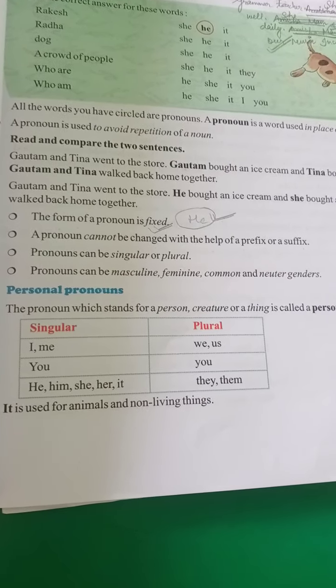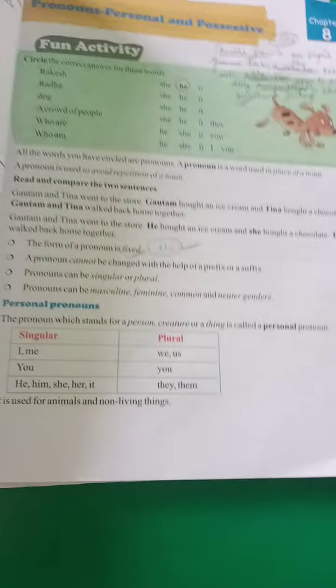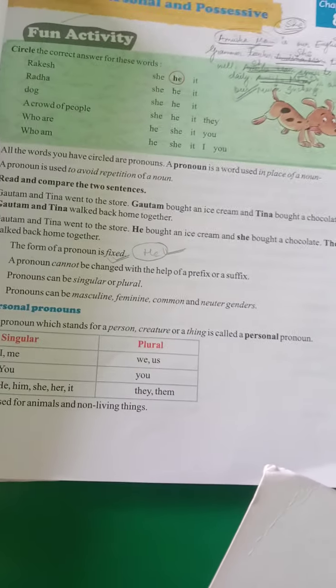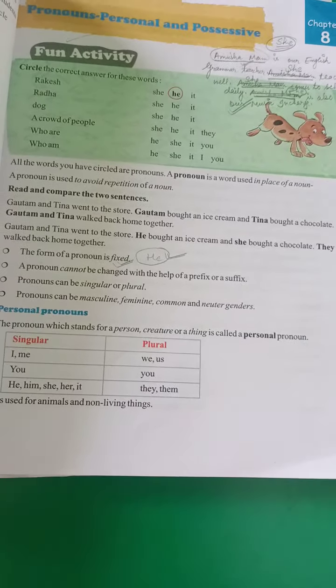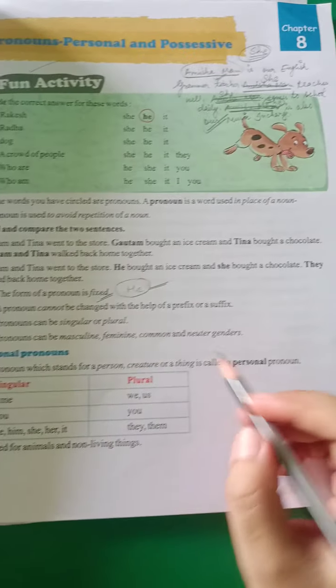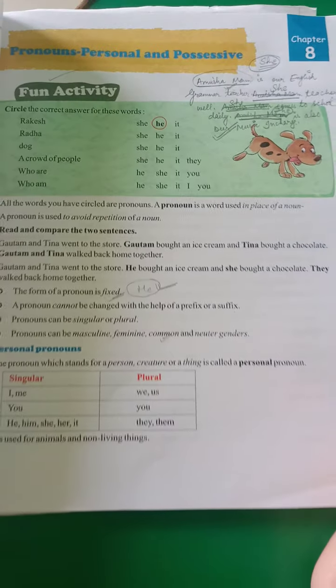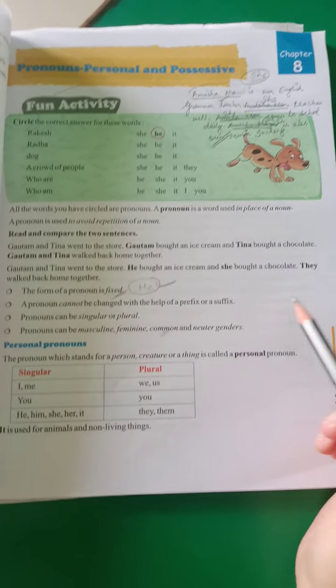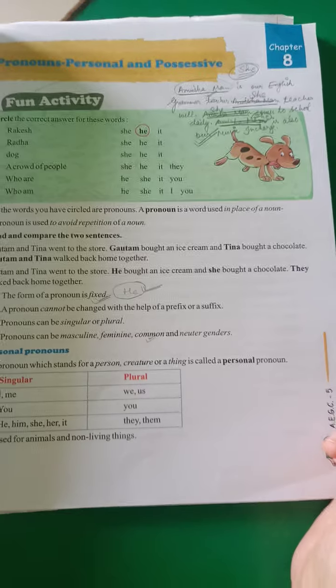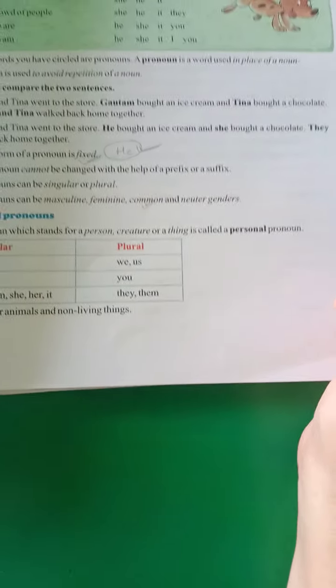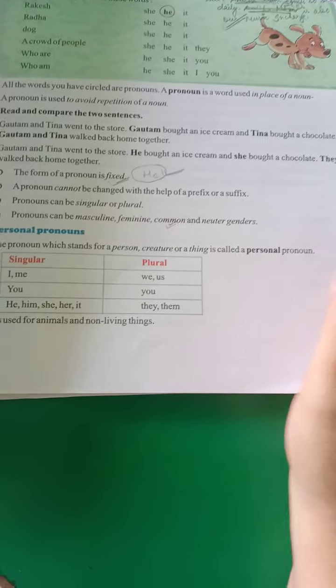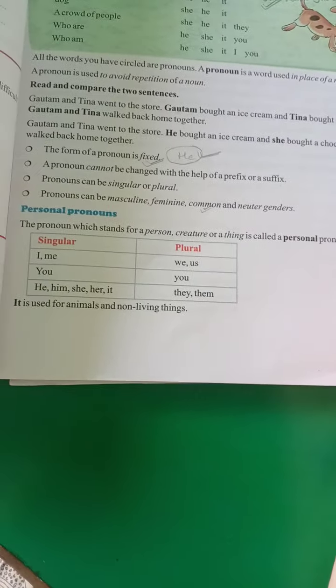Masculine is for males, feminine is for females. Common gender is used for all — for example, the word 'student' is common for all. And neuter gender means the gender which is non-living.